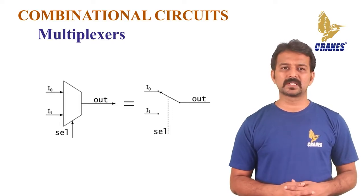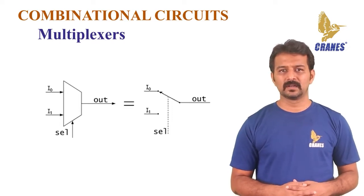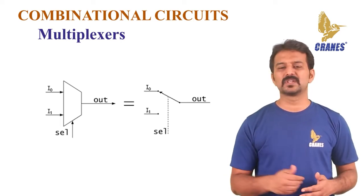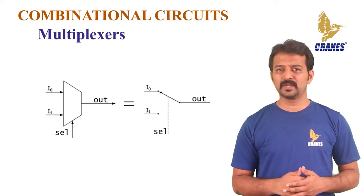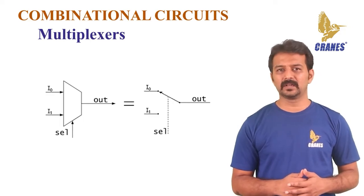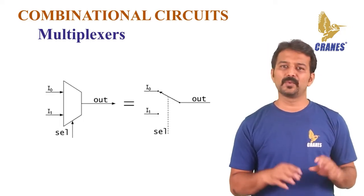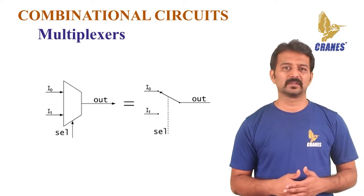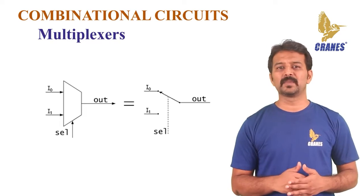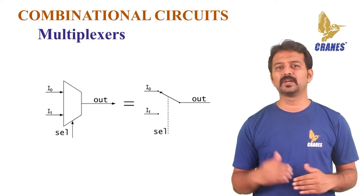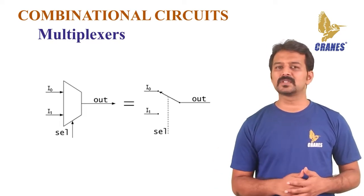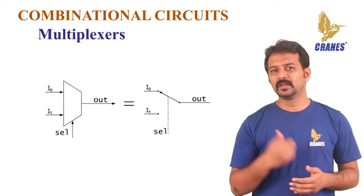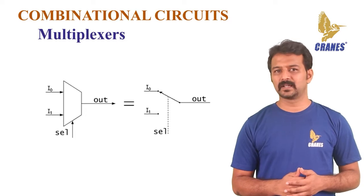Multiplexers are also known as data selectors, parallel-to-serial converters, many-to-one circuits, and universal logic circuits. Multiplexers are mainly used to increase the amount of data that can be sent over a network within a certain amount of time and bandwidth. The select lines determine which input is connected to the output and help increase the amount of data that can be sent over a network within a certain time, which is why a multiplexer is also called a data selector.